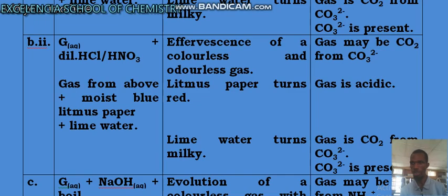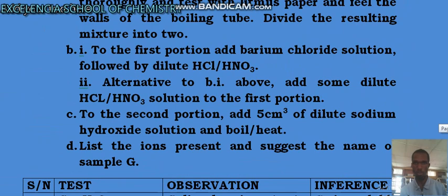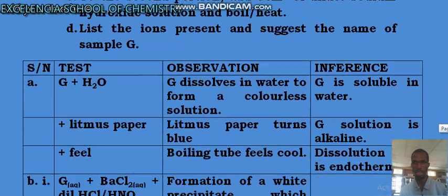So when we go back to the original equations, C, to the second portion, we are done with the first portion. Add 5 cm³ of dilute sodium hydroxide solution and boil or heat. Same thing.